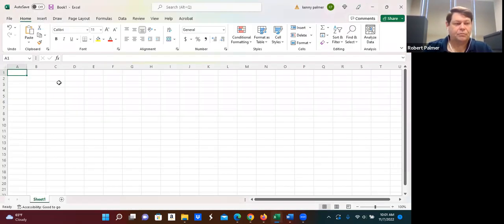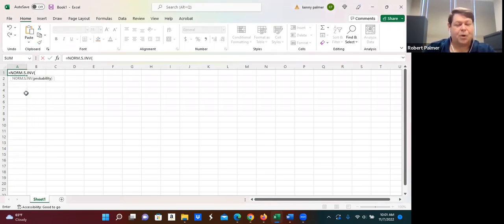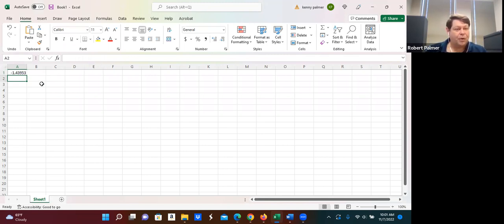Let's go to Excel, and we should use an equal sign. Start to type that in. So here it is right here. It says for probability, so 0.075. And we do that, and it's going to be negative. It's negative 1.43953.